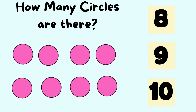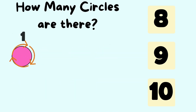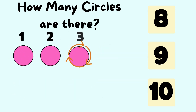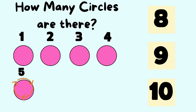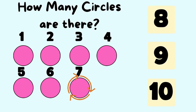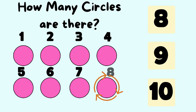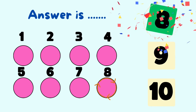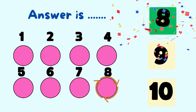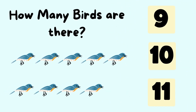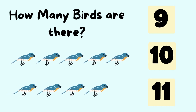How many circles are there? Let's count the number of circles. It is one, two, three, four, five, six, seven, eight circles. So the answer is eight circles.